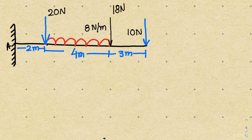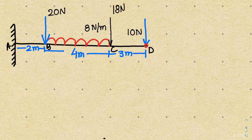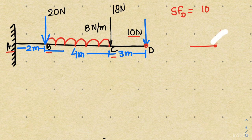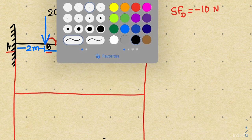Assume the beam has points A, B, C, and D. I will start the shear force diagram from point D and move from D to C, C to B, and B to A. At point D there is a 10 newton point load. When you have a point load, the point load directly comes into the shear force. Since the load is downward, the shear force at D will be negative 10 newton.